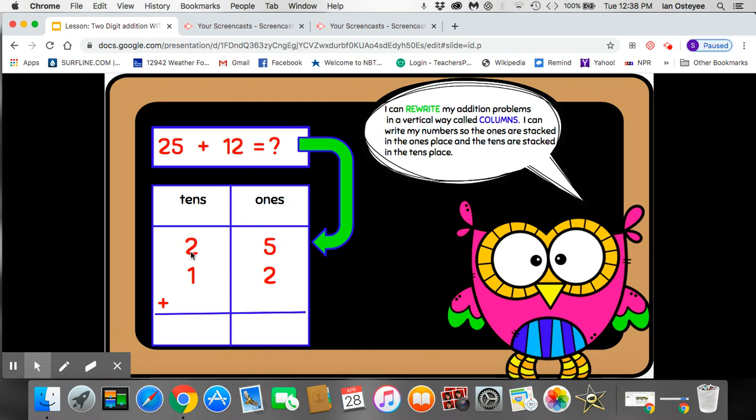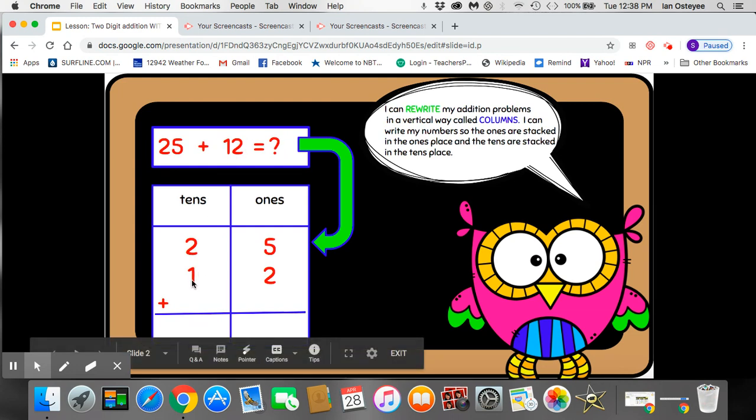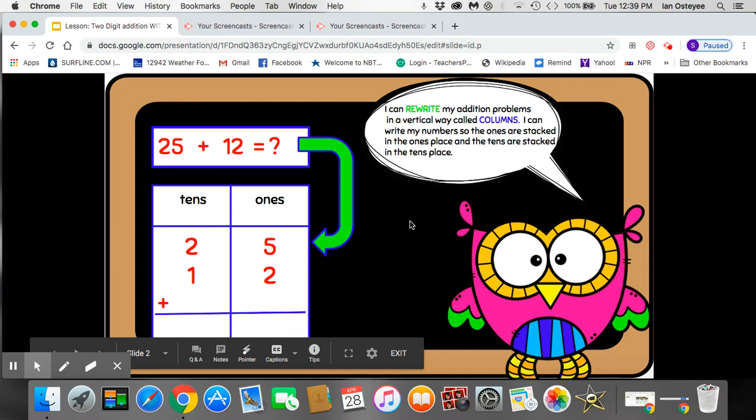I put two tens here and five ones here and then I look at 12. I see that there's one ten and two ones. So I put my one in the tens column and my two in the ones column. I have stacked them up so the ones are stacked in the ones place and the tens are stacked in the tens place.